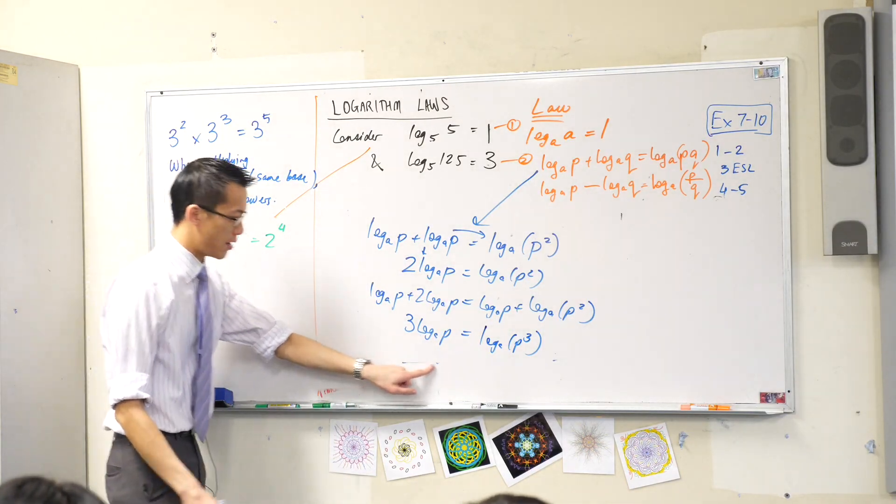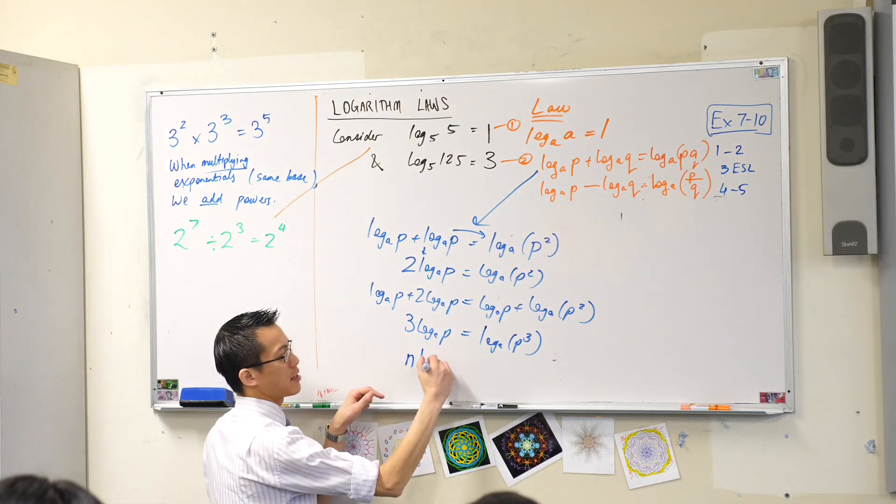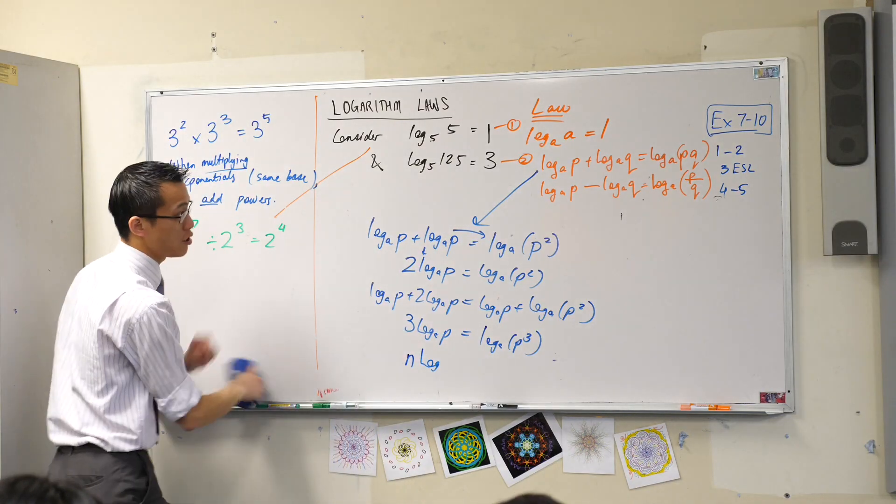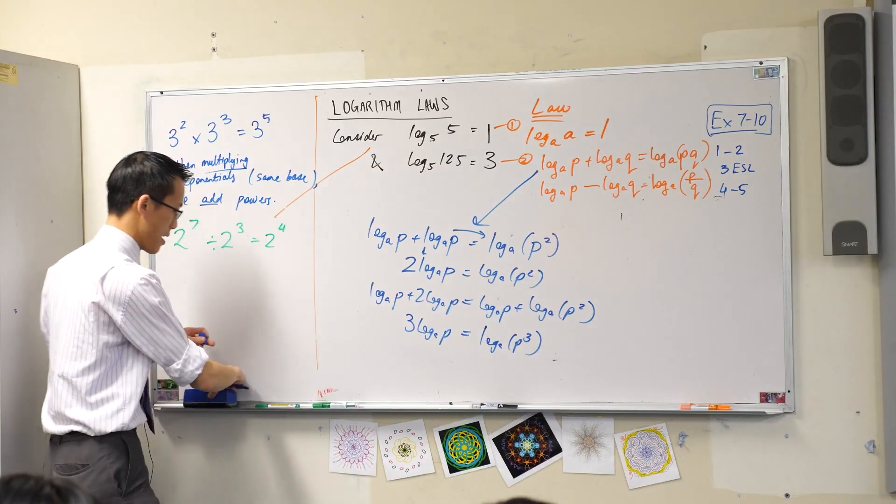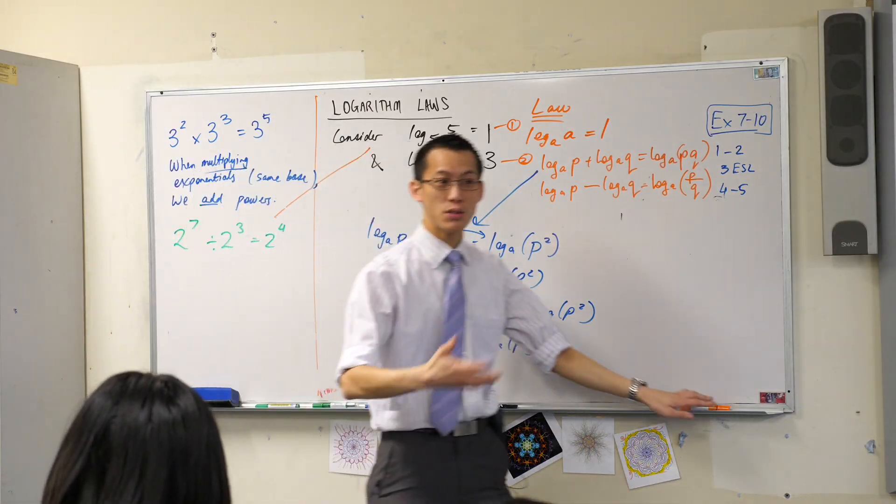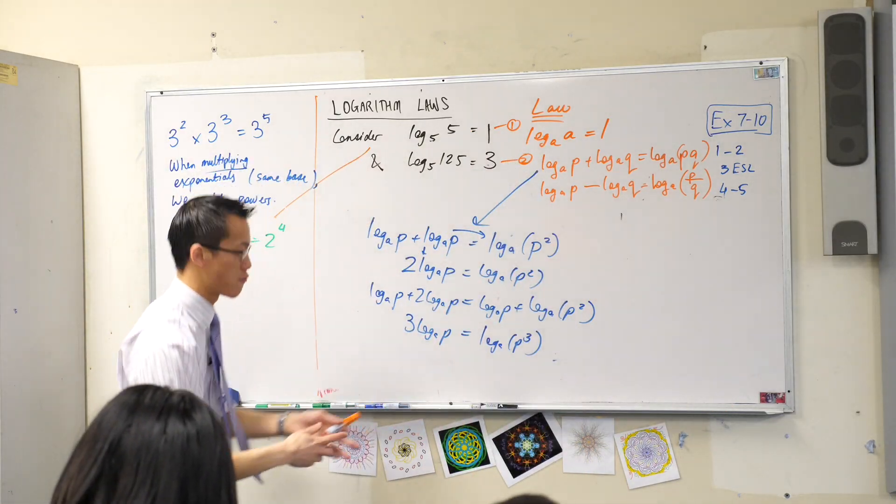So this gives us a law. I can keep on doing this forever. If you've got some number and this is, I'll put it in orange actually because this you can now add to your list of laws. If you want to pick up your pen now. This is a new law that we've just developed. We just derived actually.